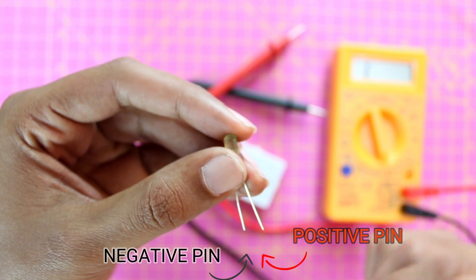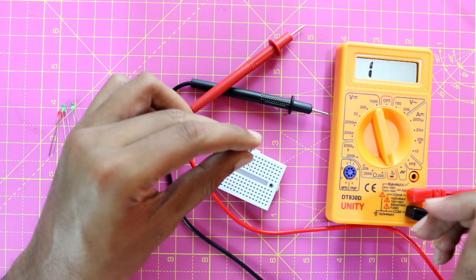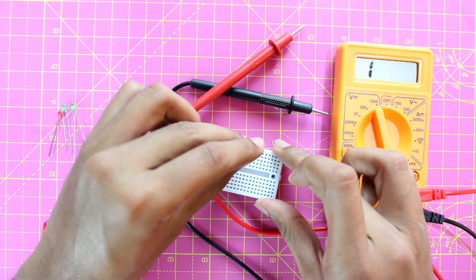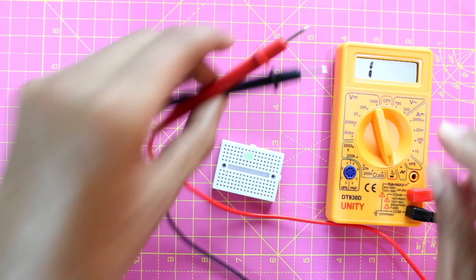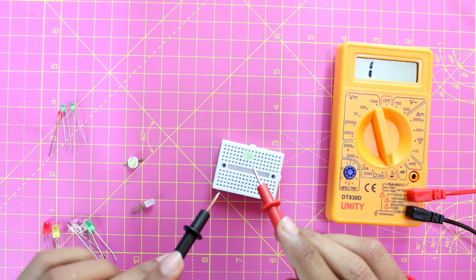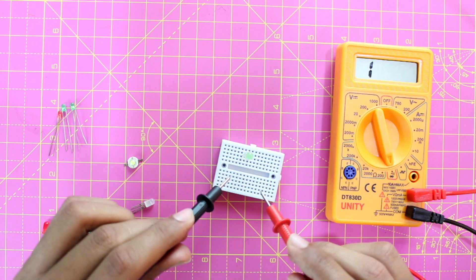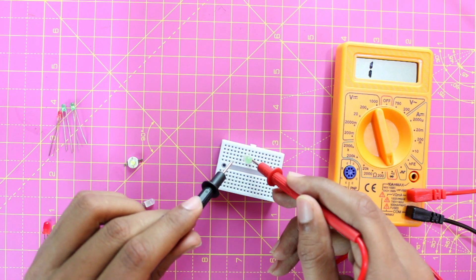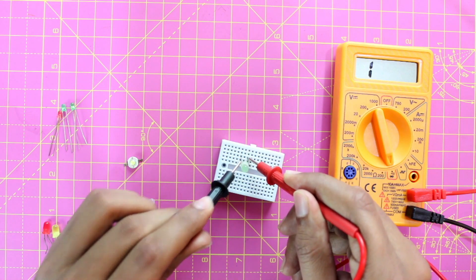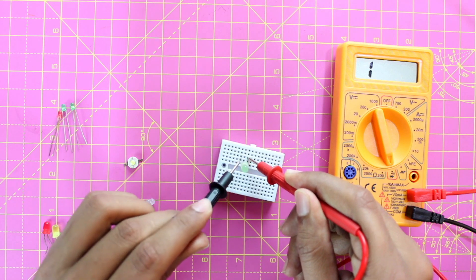Now let's test this LED. I'm just placing this LED on a breadboard for the purpose of this video. We know that the right side is the positive one and the left side is the negative one. I just have to place my probes here, and as you can see, the LED is glowing now. Obviously, this means that the LED is working.